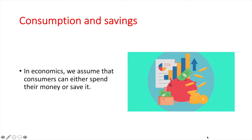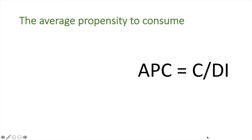In economics, we assume that consumers can either spend their money or save it. There are no alternative uses of money and all spending falls under either category. We'll be examining the average and marginal propensities for both consumption and saving in this video. Let's start with the average propensities first.